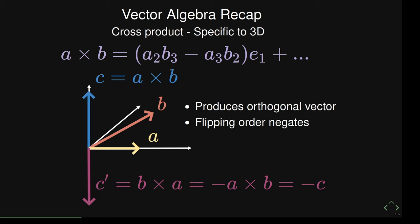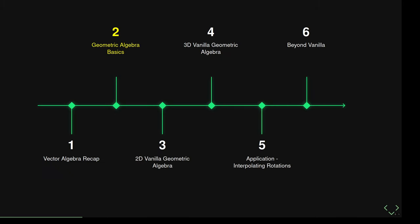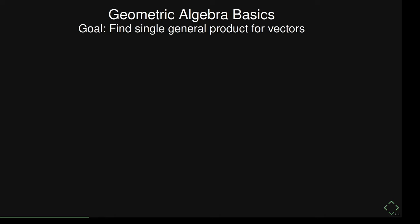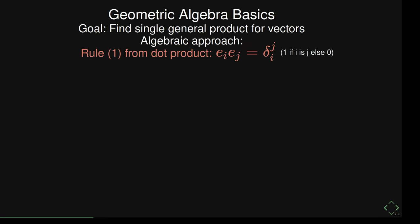We want to find a general product for any kind of vector. We had two different products, but they didn't really behave like an ordinary product. That's our goal — the geometric algebra basics. We take one rule from the dot product: two of the same basis vectors multiply to one, different ones give zero. And we take a second rule from the cross product: if you swap two basis vectors, you pick up a minus sign — Ei·Ej = −Ej·Ei. Those are all the rules you really need for this basic product.